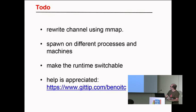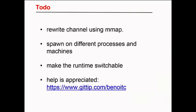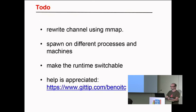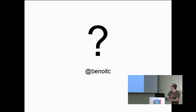What I want to do going forward: rewrite channels using a map (mostly done), span across different processes and machines (which requires the first goal to be done first), and make the runtime switchable like in Rust — so you can switch to a live runtime, a multiprocessing runtime, or any other runtime. Any help is appreciated and you can contribute to the repository.